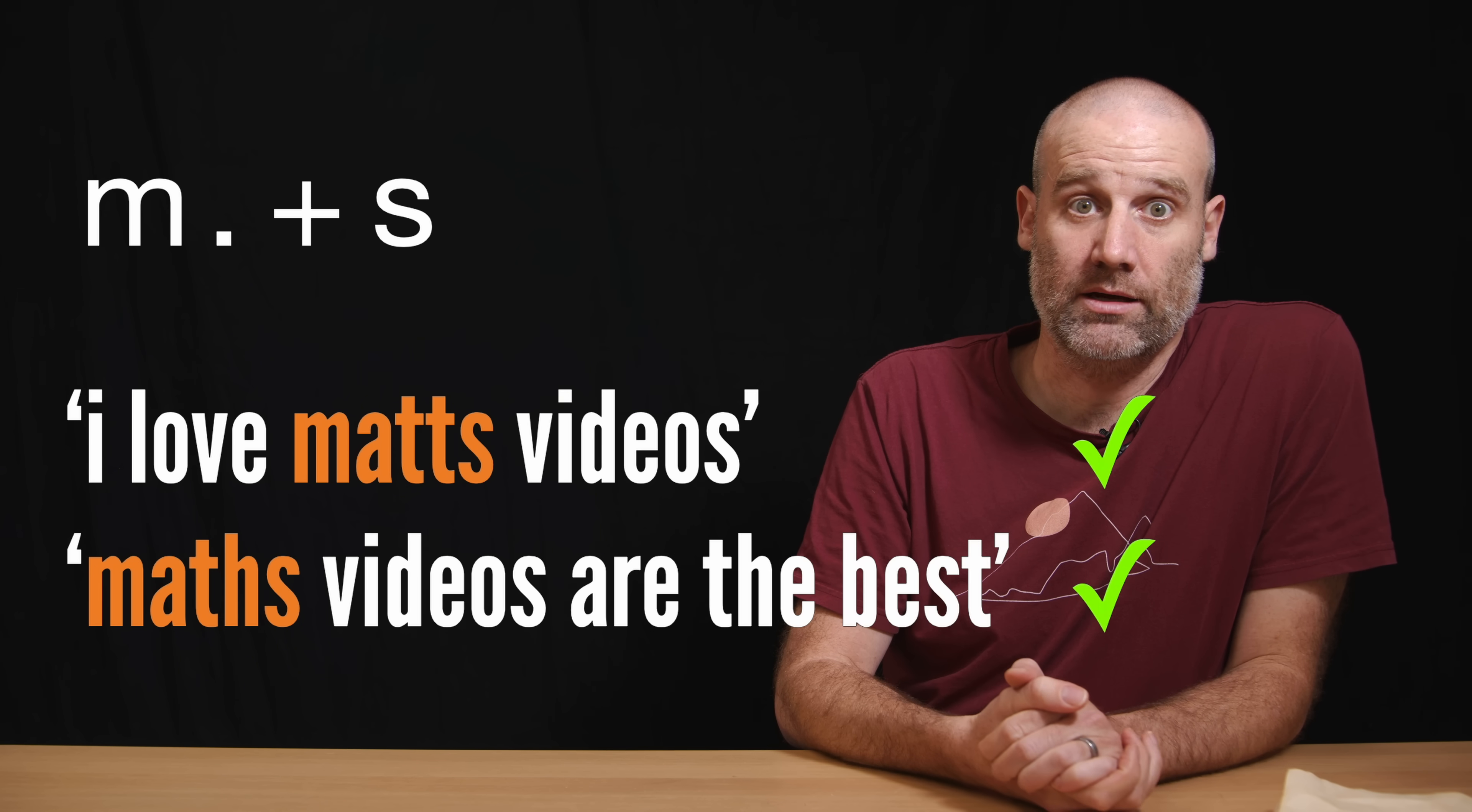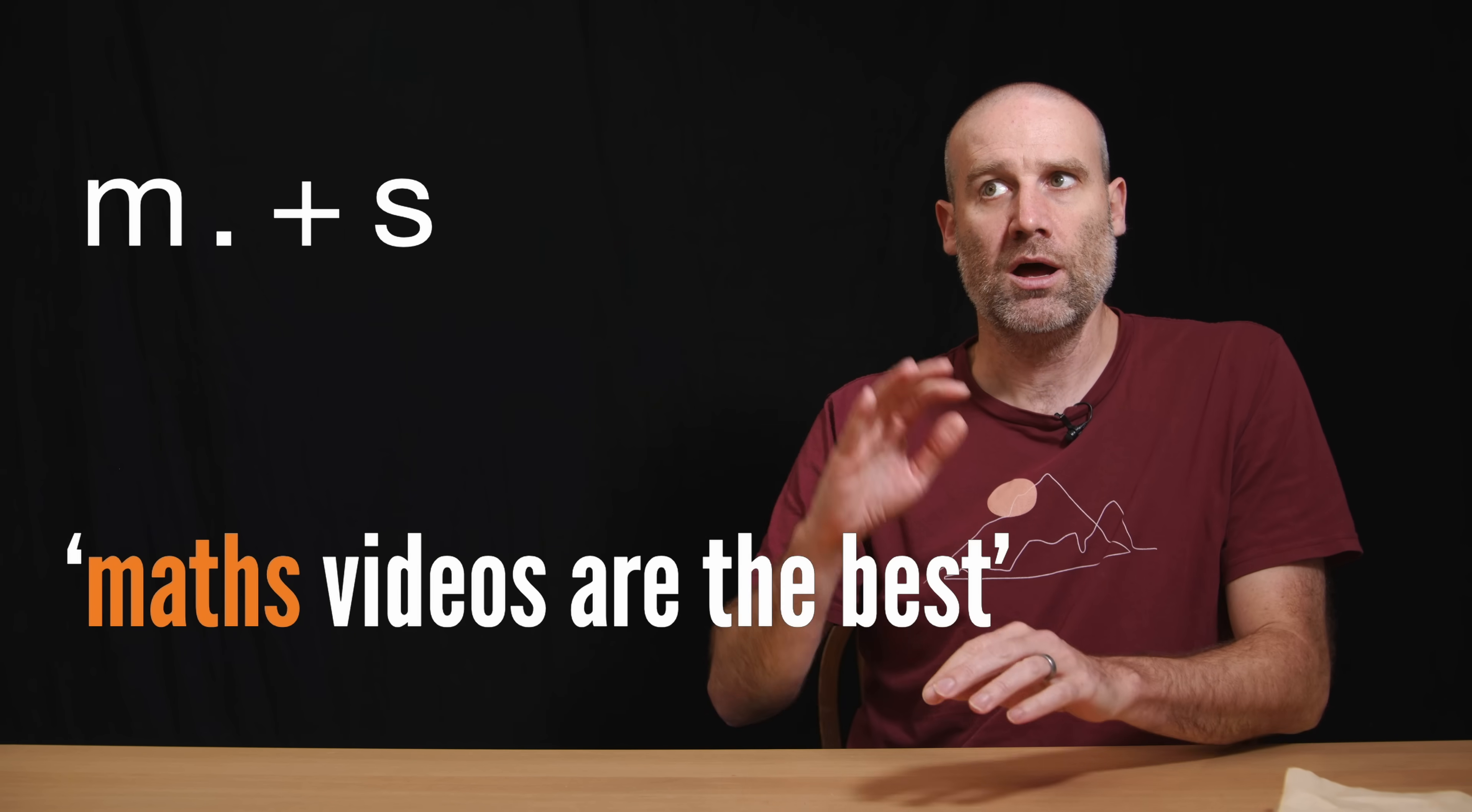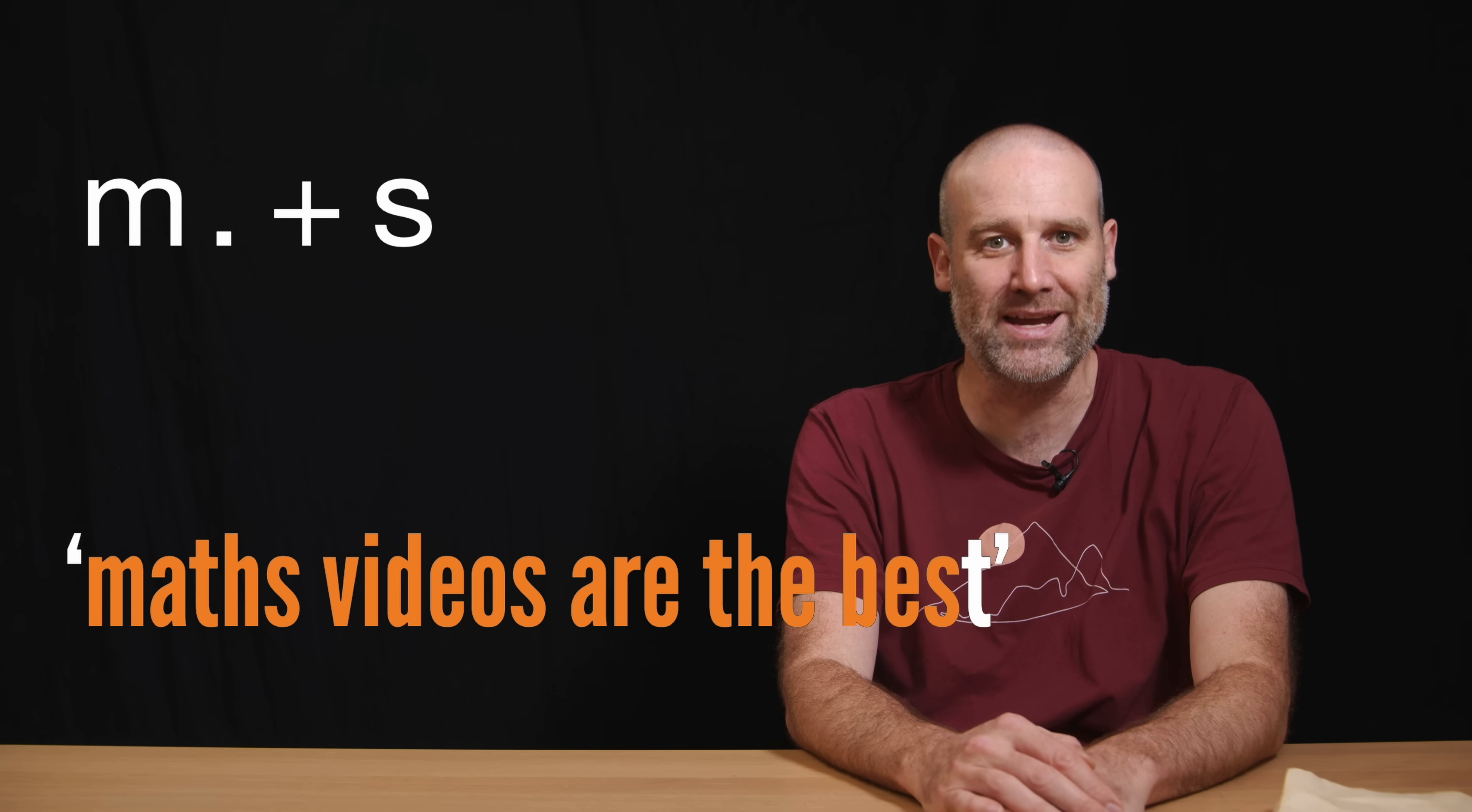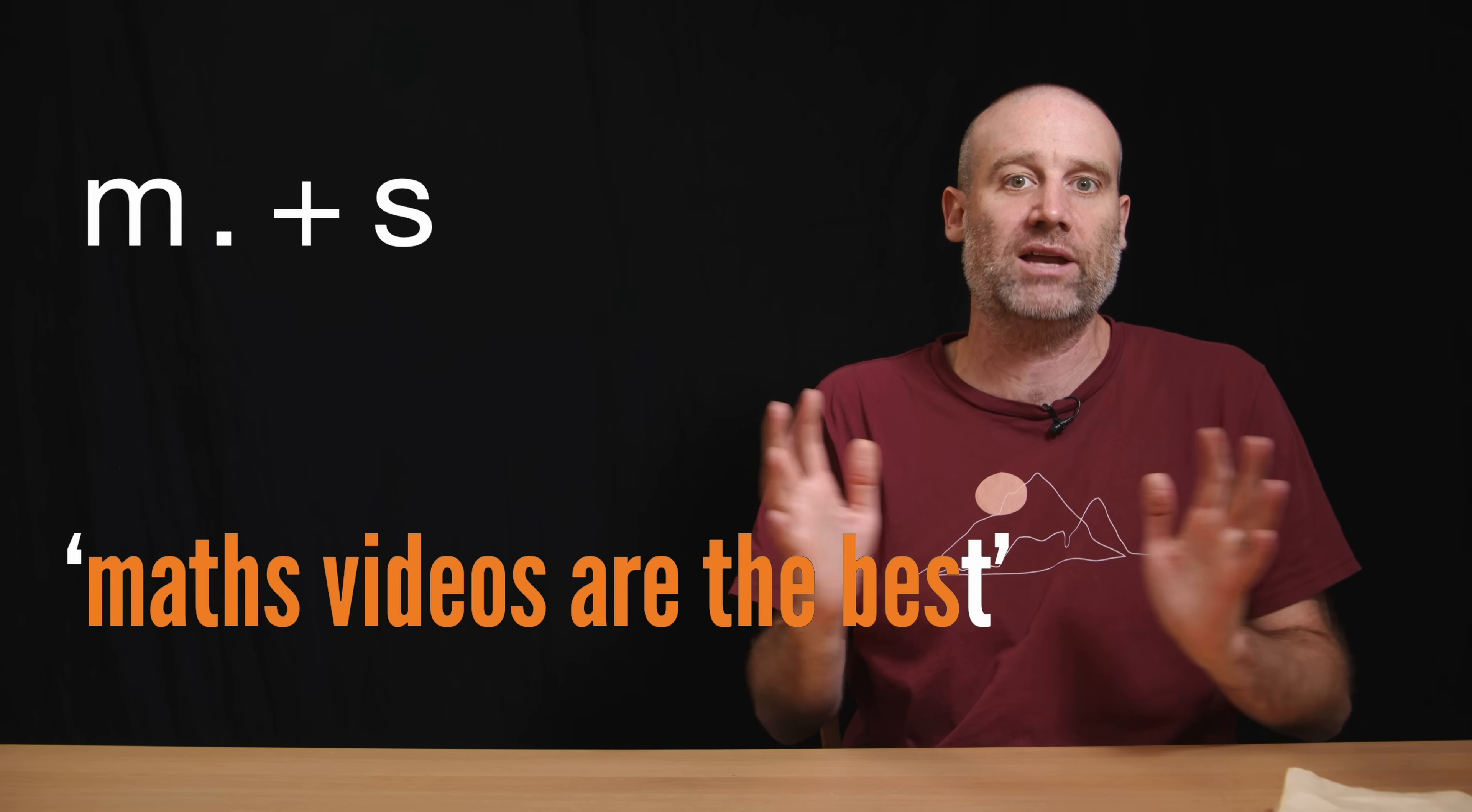But now there's a level of ambiguity here. Some of you may have noticed in both these cases, there's multiple points in the string that match our new search. Because if we don't say how many wildcards between m and s, that could match maths from an m to an s. It could match maths videos. That's an m to an s with wildcards in the middle. Or it could be the whole thing apart from the final t. It could be maths videos are the best.